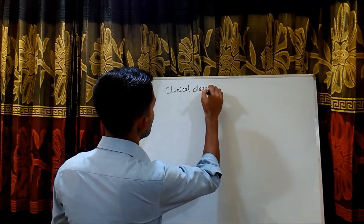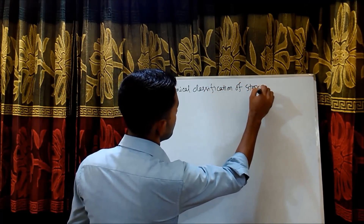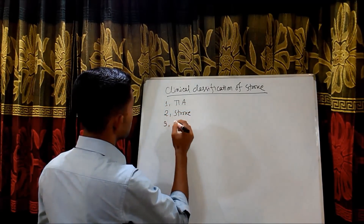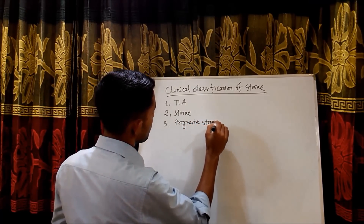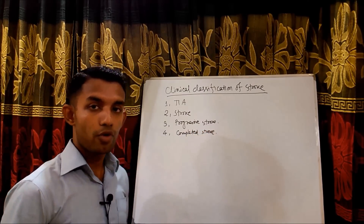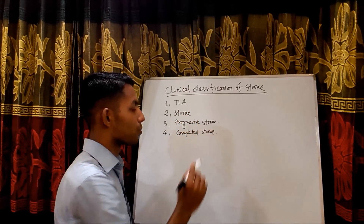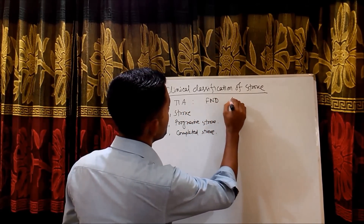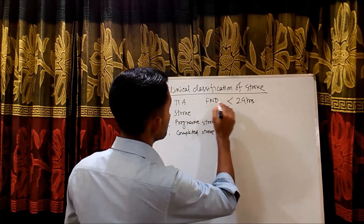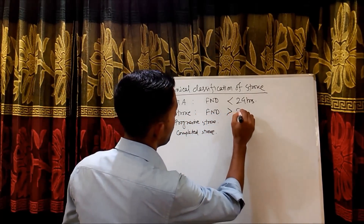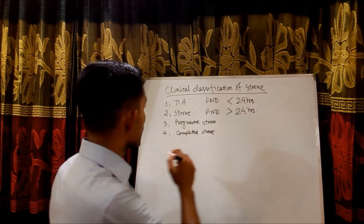According to the clinical classification, there are four types of stroke: transient ischemic attack, stroke, progressive stroke, and completed stroke. Transient ischemic attack is when focal neurological deficit resolves within 24 hours. When focal neurological deficit persists for more than 24 hours, it is called stroke.